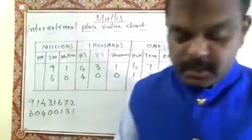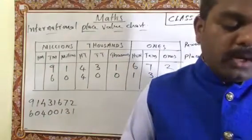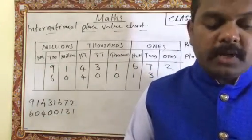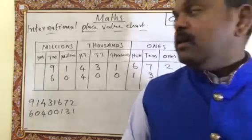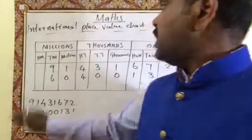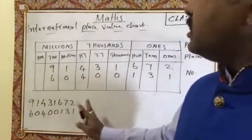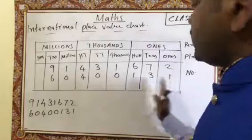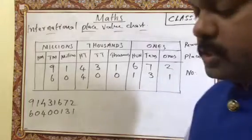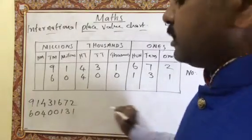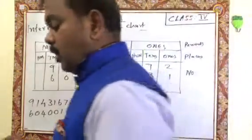In your book, exercise 1.8 is given: 'Write the following numbers in the International place value chart and their number names.' First, make the chart and write the numbers from right side to left side, then write the number names.